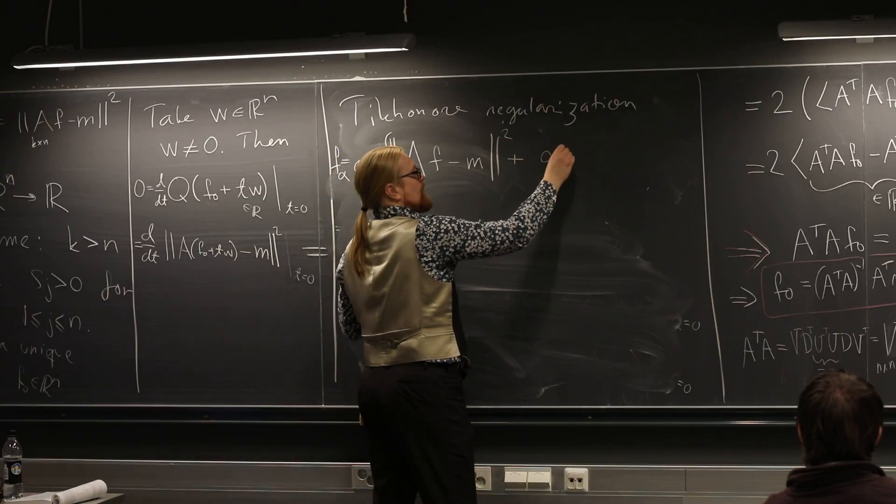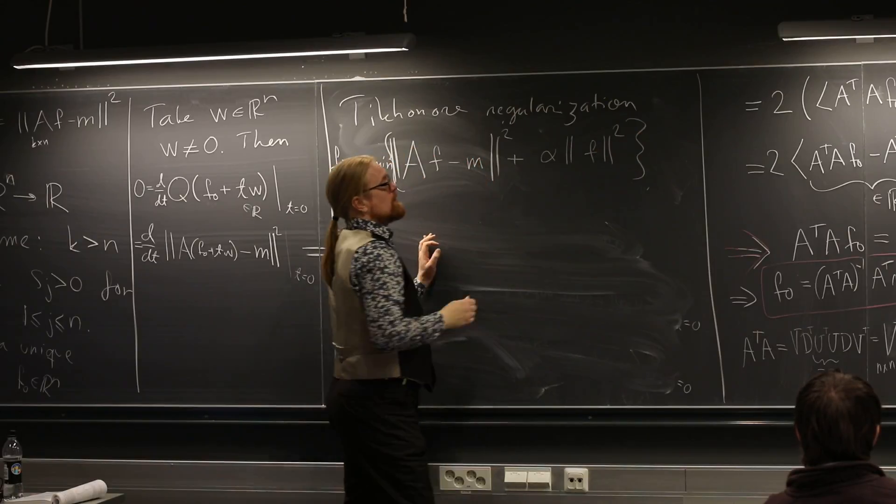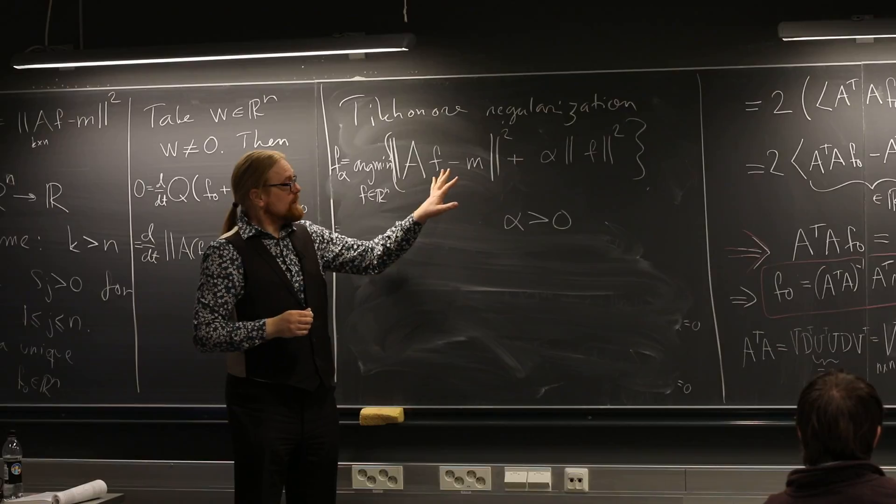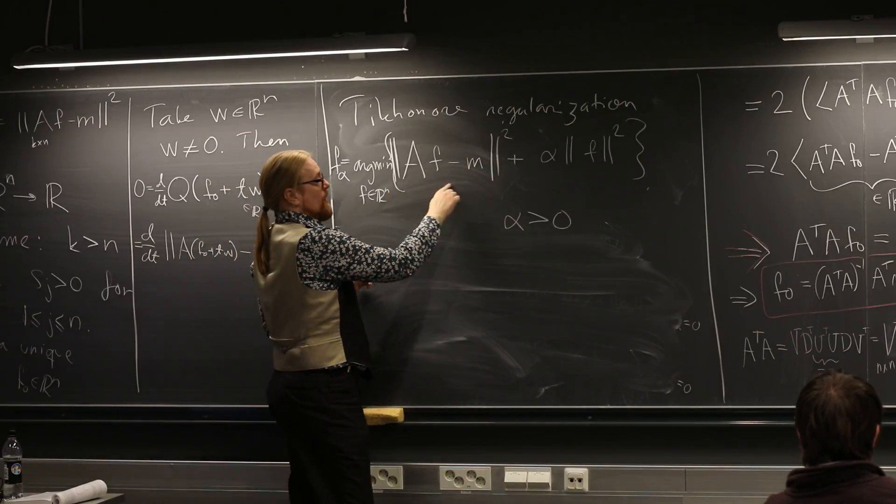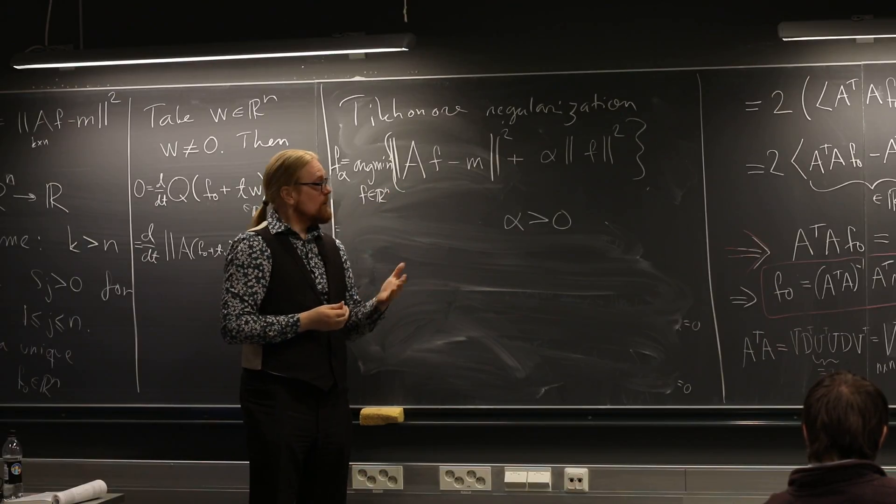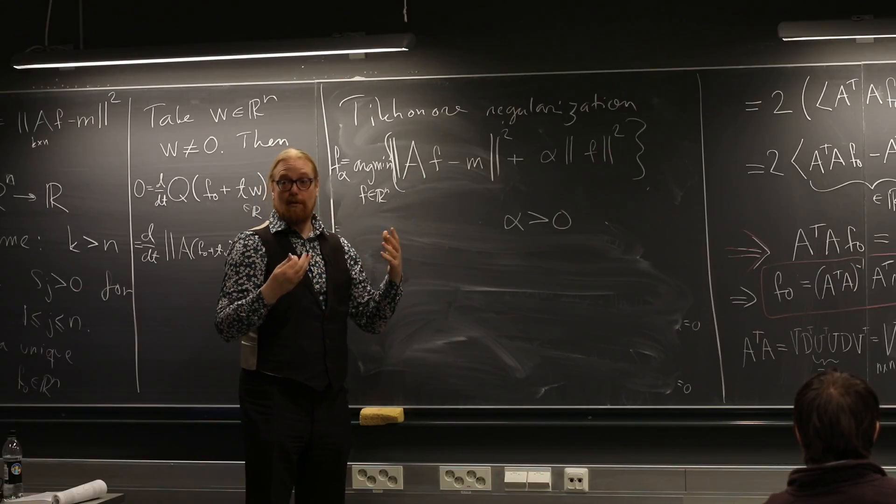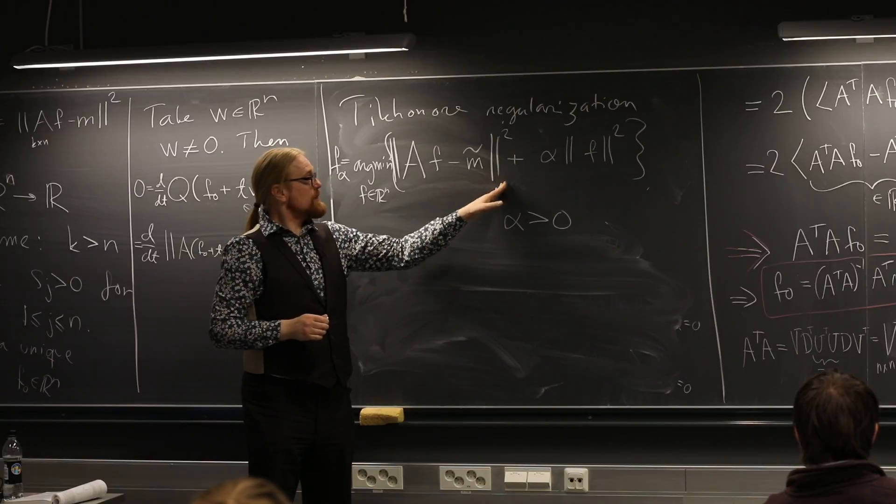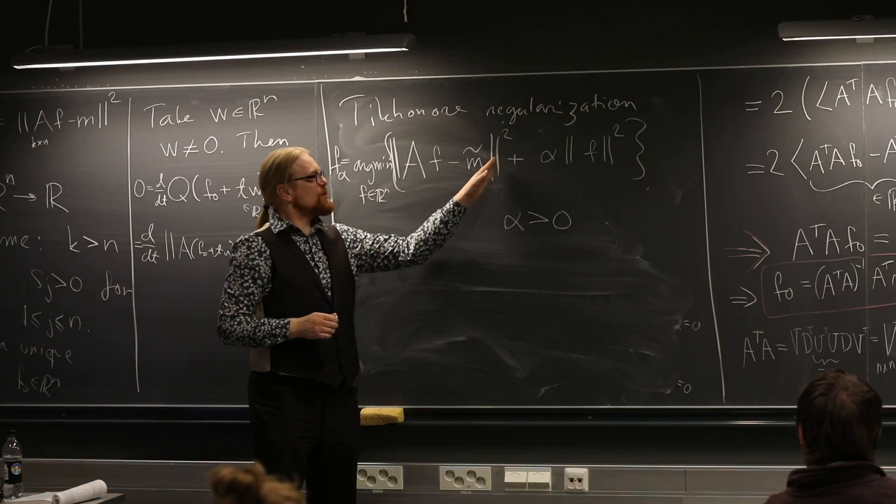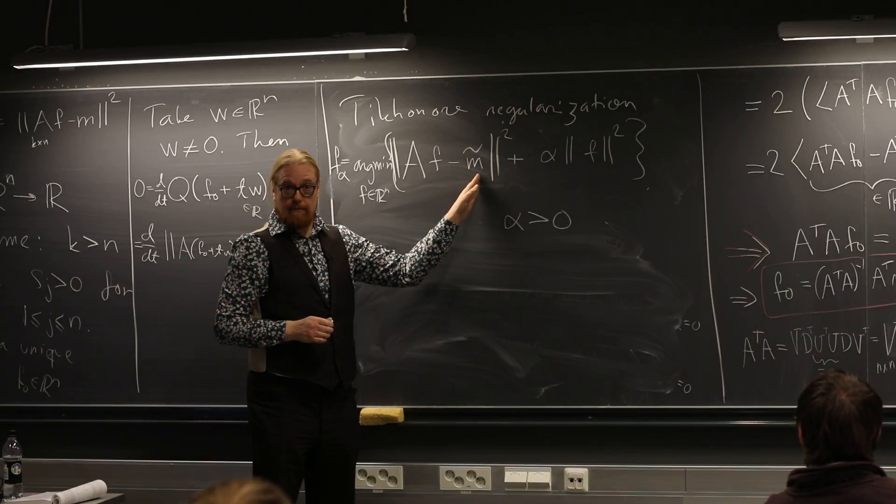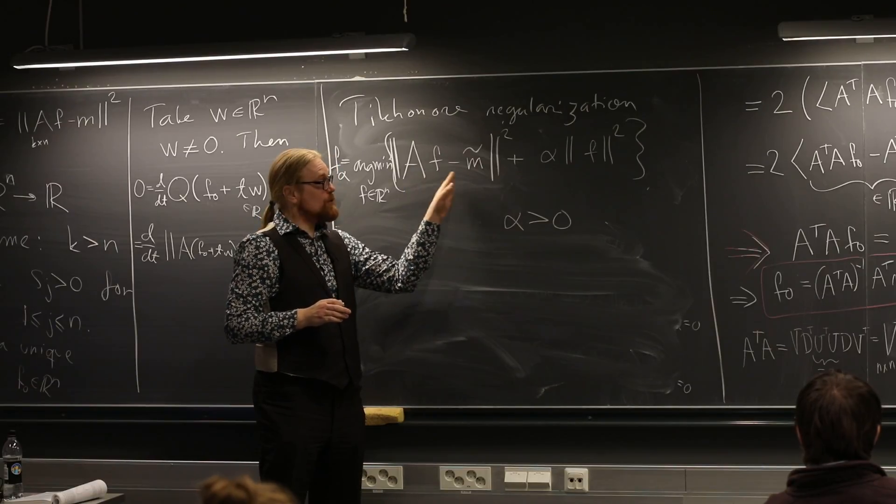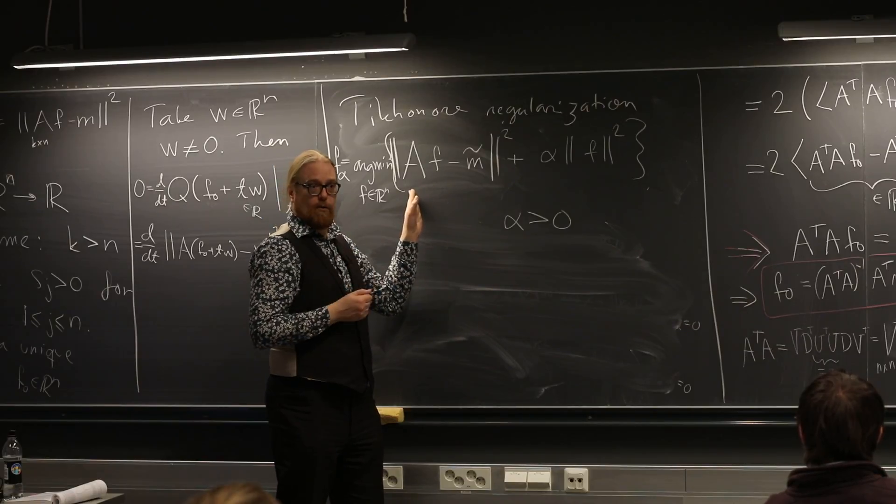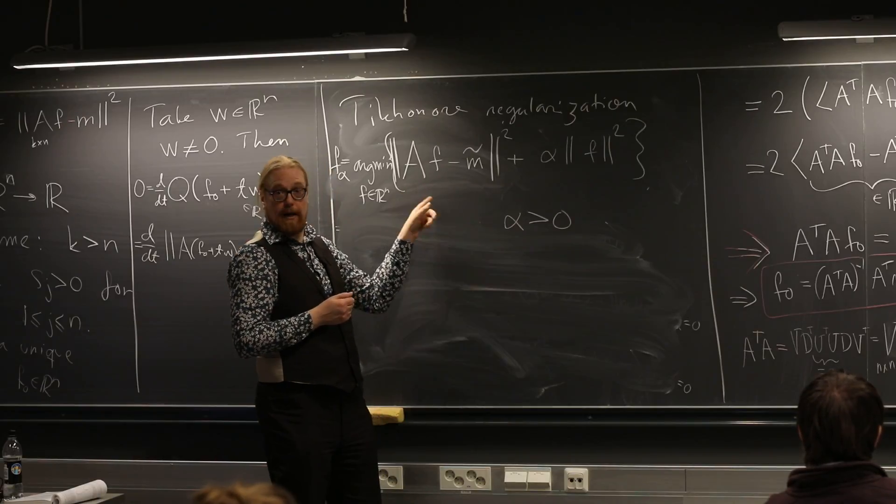So in Tikhonov regularization, we actually do this. There is a so-called regularization parameter alpha. The thinking behind this is that this part deals with the measurement information. For some f we try here, the A-matrix will take virtual measurements of f and compare them to the actual measurements. This is kind of taking care that whatever f we are looking at, it should give measurements close to the ones given by the device. But as we saw, there can be infinitely many of these f-points that give a small number for this one. So we have another penalty. This is kind of a penalty. This is the first penalty coming from... This penalizes for giving the wrong measurements. If f gives the wrong measurements, it gets penalty from this guy.